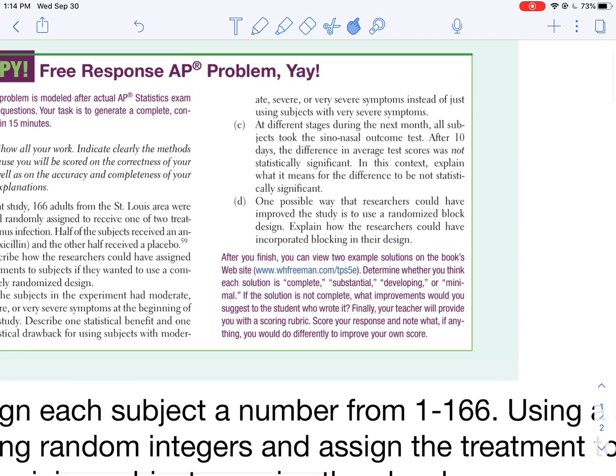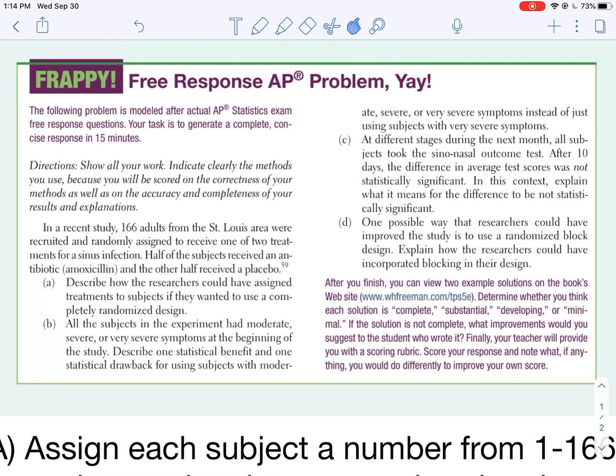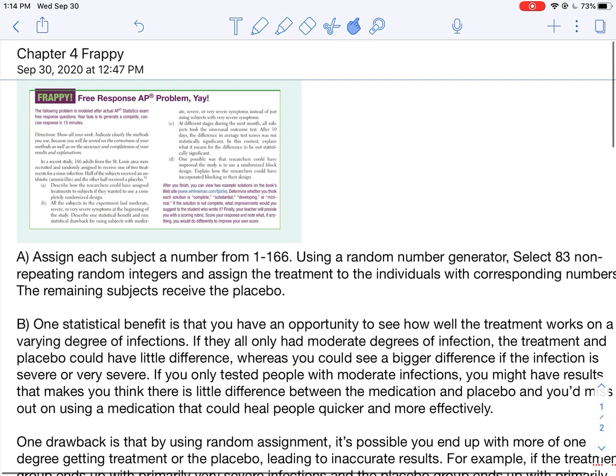So hopefully this gives you some perspective on how to answer this question. It's the first free response question you've really seen and you're going to be seeing these throughout the year. So hopefully you paid attention to the depth I provided, how long each one was, as well as the key things like providing consequences for a result, being specific when I was doing my random assignment, not overly specific but just enough so that you can give an idea that you know what's going on with this process.